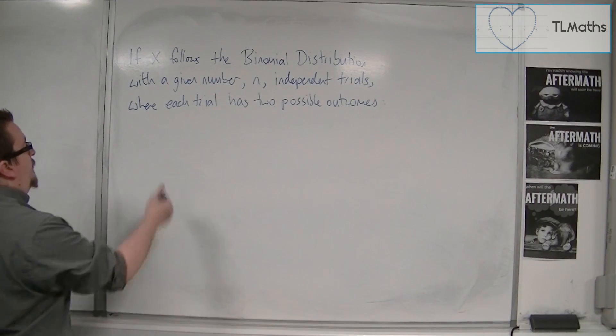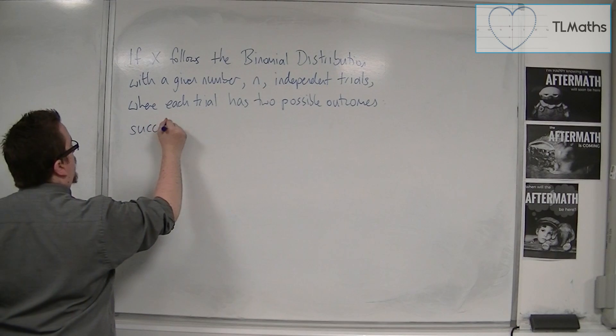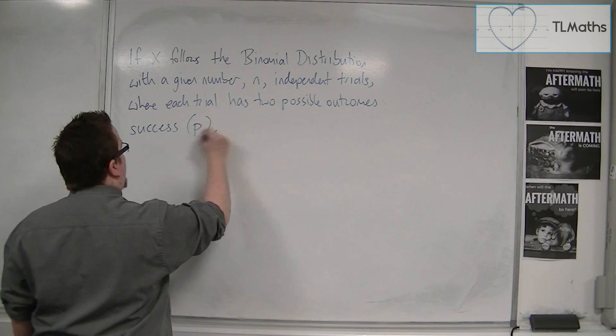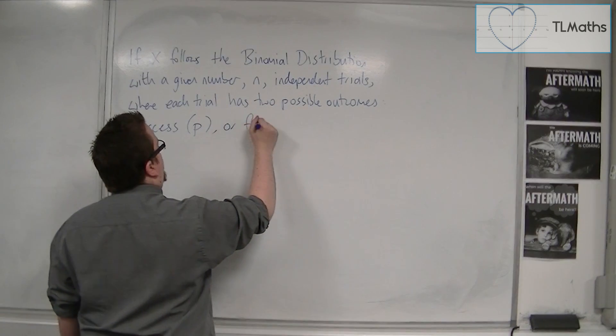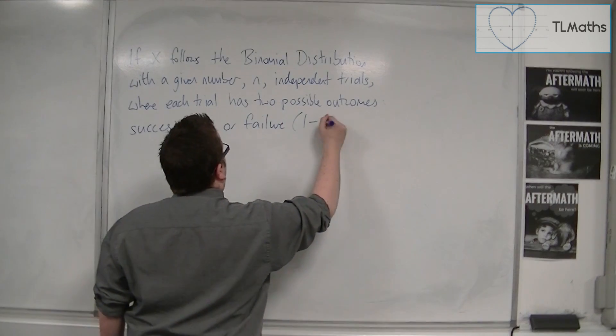So either success, which we would write down as p, or failure, 1 minus p.